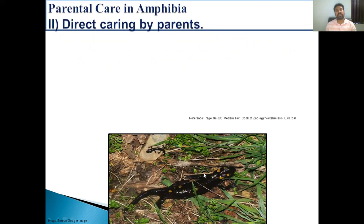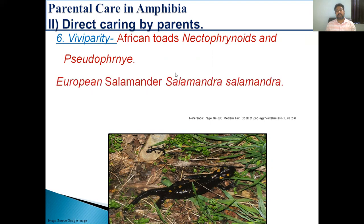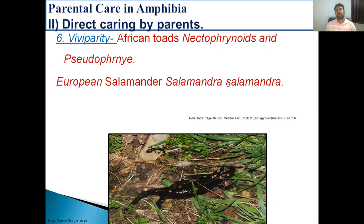The next type of direct parental care is viviparity. In this case, there are anurans which are viviparous, meaning they directly give birth to young ones. The examples are the African toad, Nectophrynoides and Pseudophryne, where the females are viviparous. And in the case of the European salamander, Salamandra salamandra, the female gives birth to 20 or more young ones. So these amphibians show very interesting ways to care for their eggs and larvae, and some amphibians avoid laying eggs entirely, showing direct development or viviparity.